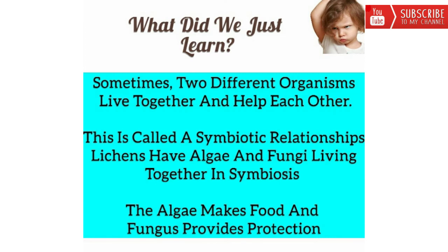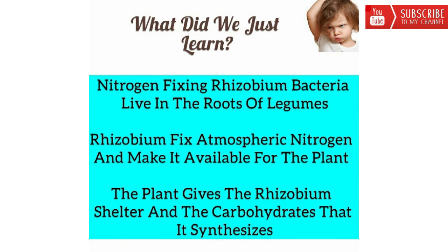What did we just learn? Sometimes two different organisms live together and help each other — this is called a symbiotic relationship. Lichen have algae and fungi living together in symbiosis: the algae makes food and the fungus provides protection. Nitrogen-fixing rhizobium bacteria live in the roots of legumes. Rhizobium fixes atmospheric nitrogen and makes it available for the plant, and the plant gives the rhizobium shelter and the carbohydrates that it synthesizes.